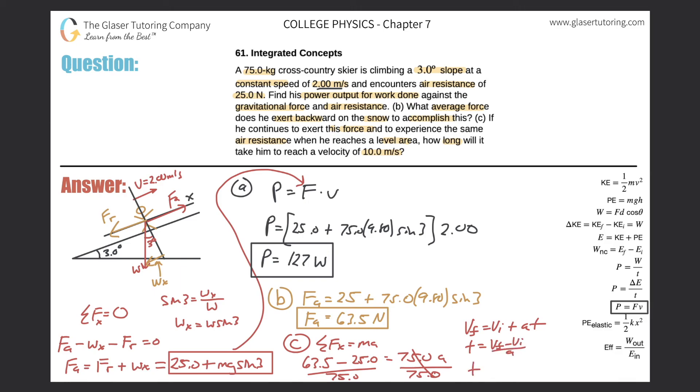So the time value here will be final velocity was 10 meters per second. The initial was 2. And now that's all going to be divided by this fraction. So this is 63.5 minus 25 all over 75. Sorry for the small handwriting there, guys.